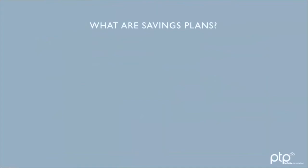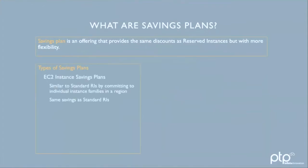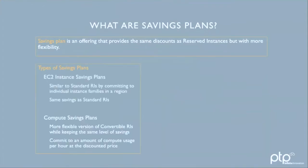Now that you know what reserved instances are, let's take a quick look at what savings plans are. Simply put, savings plans provide the same discounts as reserved instances, but with more flexibility. You can even say this is RI 2.0. Since it is a refreshed version of reserved instances, there are two types of savings plans offerings for each of the RIs.